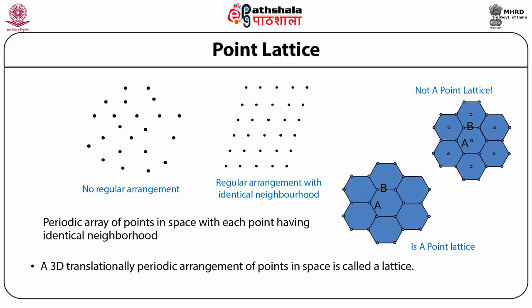From the figure on the left hand side, the arrangement is irregular — there is no periodic arrangement, so this is no point lattice. Whereas on the right hand side, you can see a periodic arrangement or a regularly spaced array of points with identical neighborhood. So this is the example of a point lattice. We can summarize that a periodic array of points in space with each point having identical neighborhood is a point lattice.